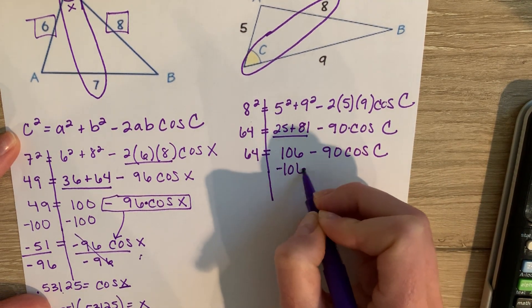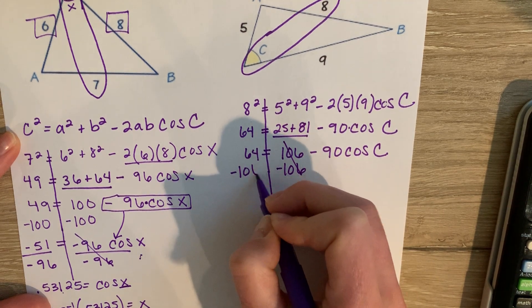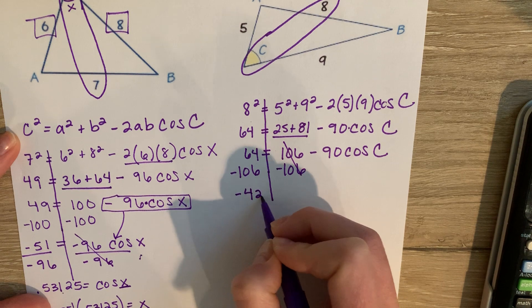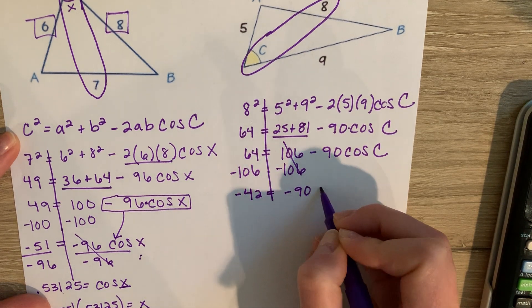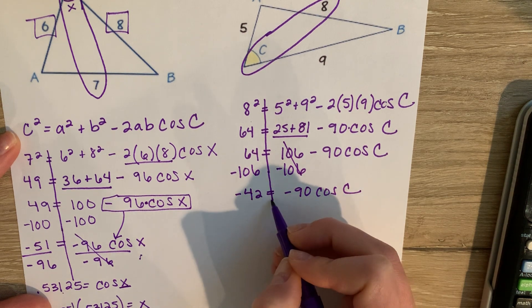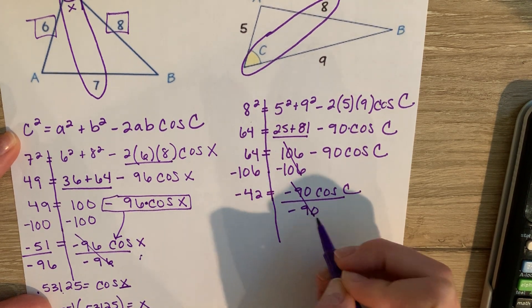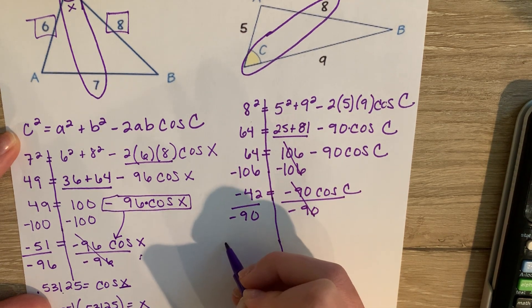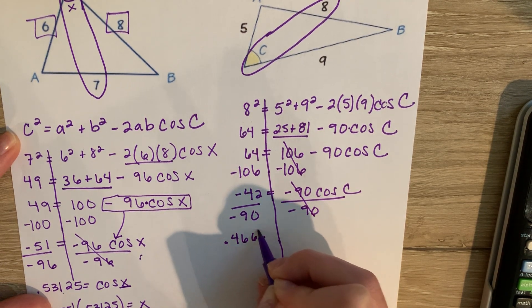I then subtract 106 to the other side. So I get negative 42, which is okay because I still have a negative on this side. Then I divide by negative 90, and I get approximately 0.4666 repeating.